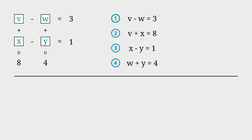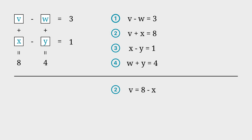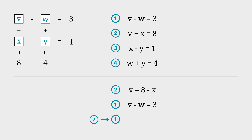Now that we have our rules, let's solve it. Starting with equation 2, V plus X is 8 — subtract X from both sides and you have isolated V as V is equal to 8 minus X. Looking at equation 1, V minus W is 3 — substitute equation 2 into equation 1, then isolate W and you will get W is equal to 5 minus X.